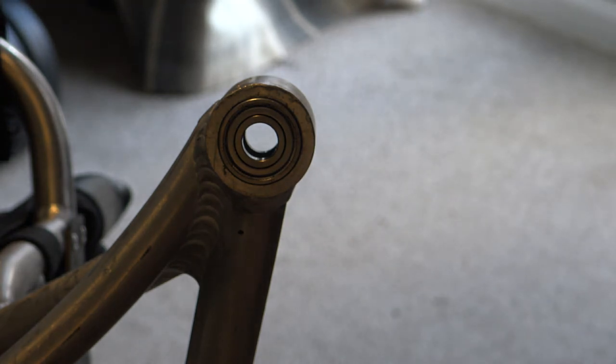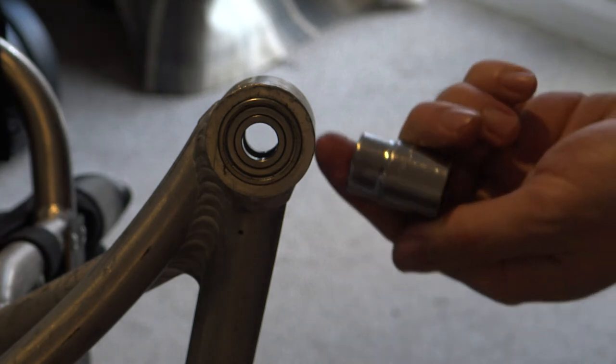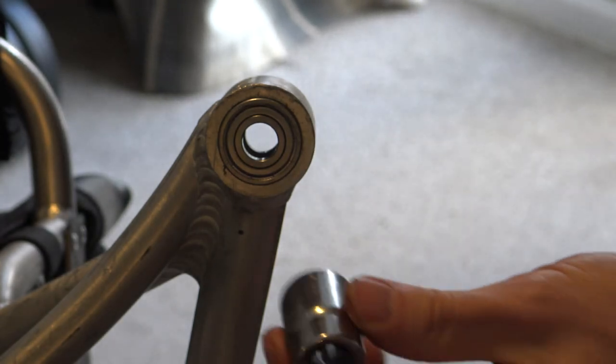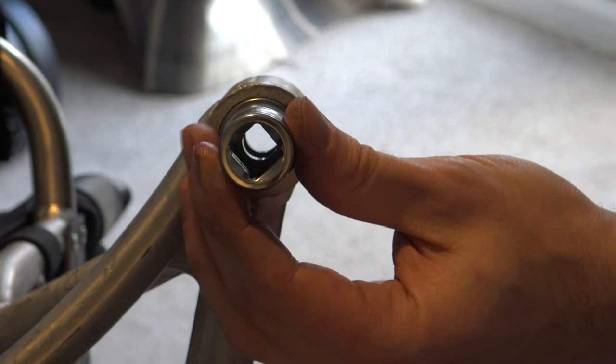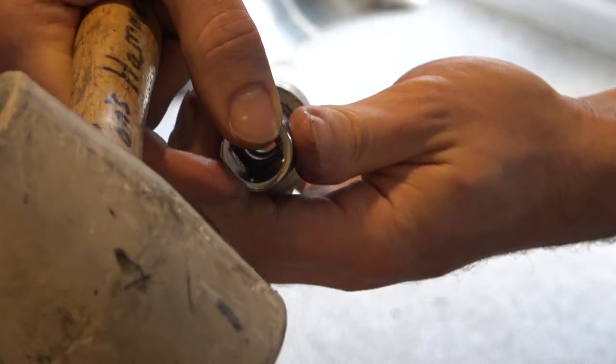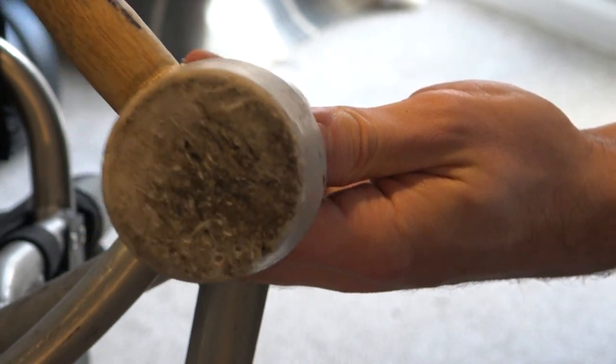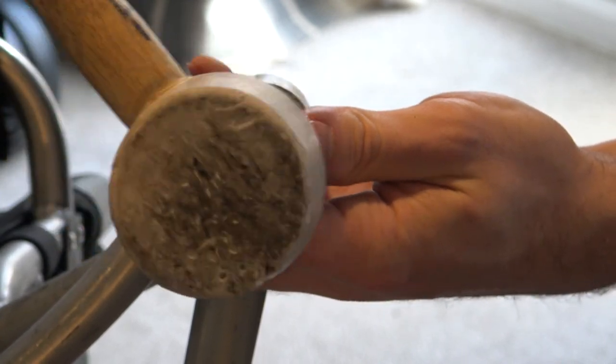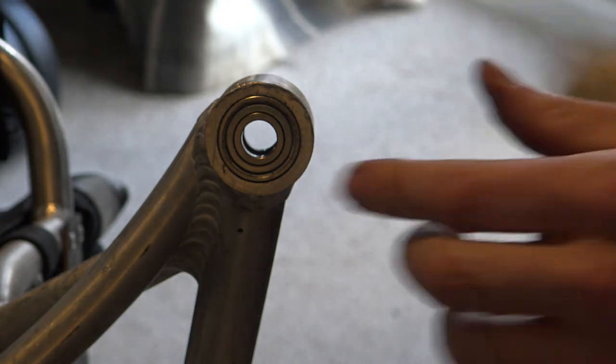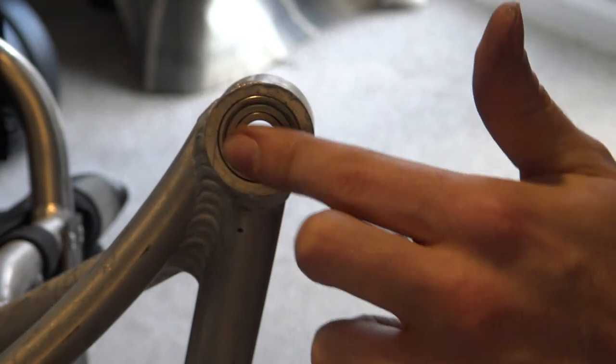I like to use my 19 millimeter attachment from my ratchet because it's about the same size as the bearing. I just angle it on and just gently tap it until it's in position. And that is perfect.